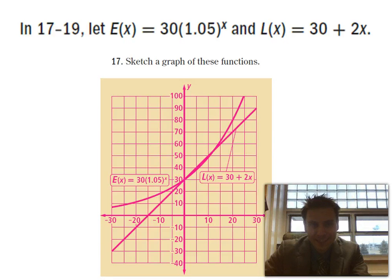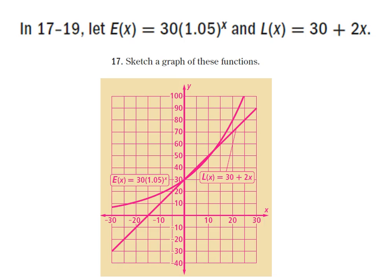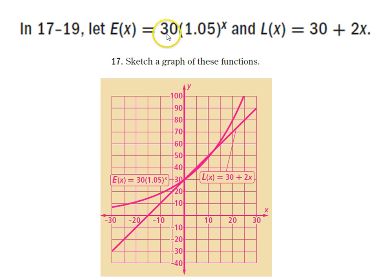We have problems 17 to 19 in this video for your Algebra Chapter 7 self-test. For numbers 17 to 19, we're going to use two functions: E of x, which is equal to 30 times 1.05 to the x power, and L of x, which is equal to 30 plus 2x.